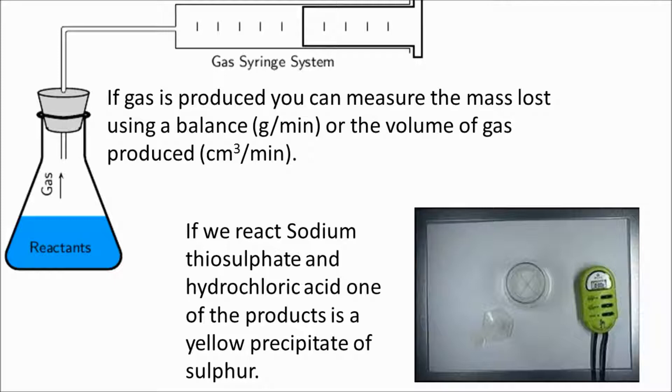A common way of testing the rate of reaction is to draw a cross on a piece of paper and put the flask over this cross. You combine the reactants together and you look down through the solution, through this liquid. And you time how long it takes for the cross to disappear, the point where you can't see that cross anymore. Stop the stopwatch. And there you go, that's a nice way of measuring the rate of reaction.